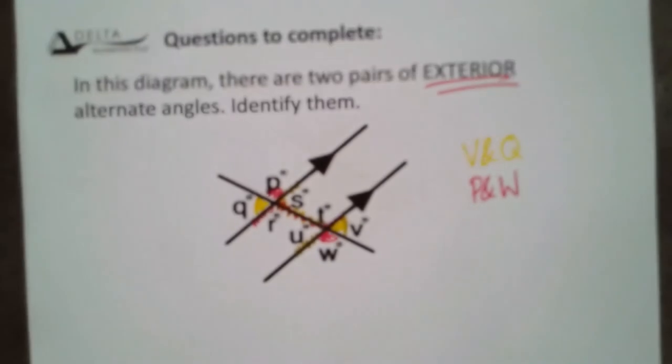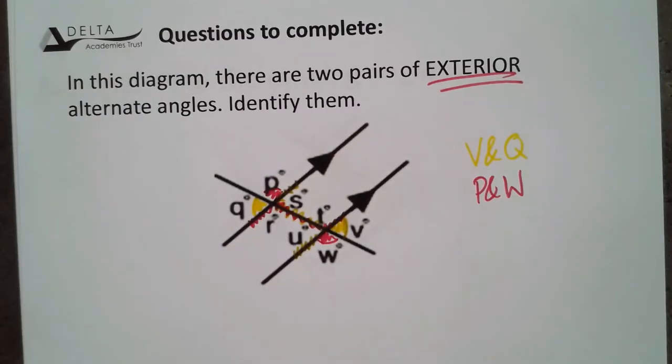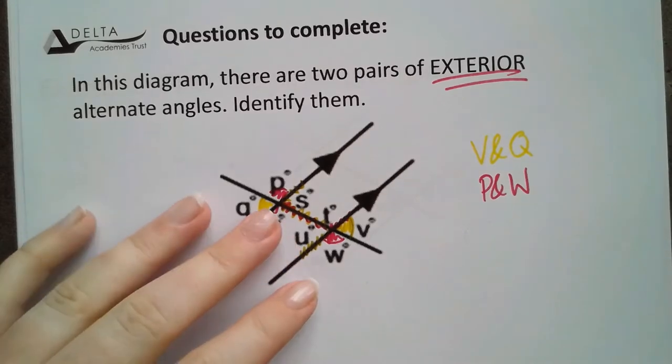So remembering that we can have both interior and exterior is going to mean that we can really efficiently solve lots of problems without having to do two steps. Quite often our brains just look for the interior ones and that's fine, but if you can remember that exterior one, your efficiency will go up.